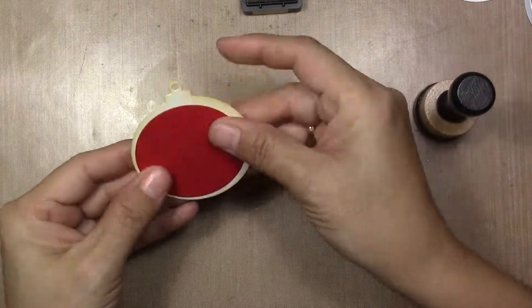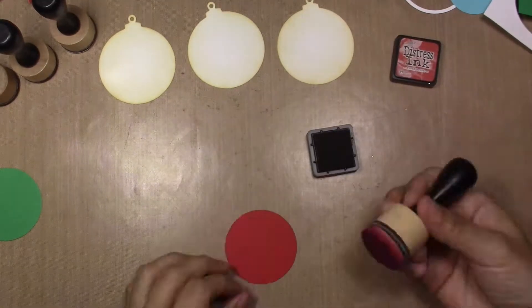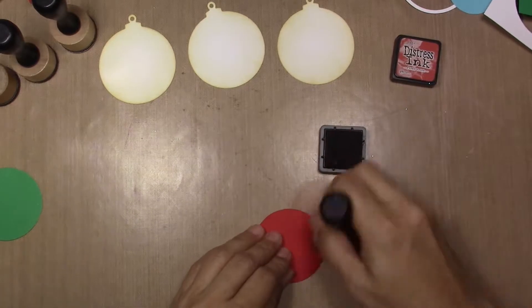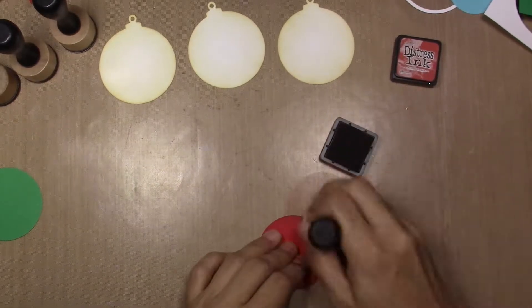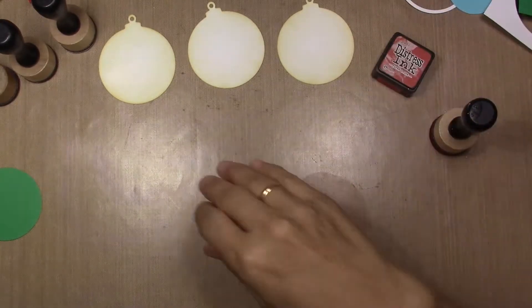Then I'm going to cut three circles, one in red, one in blue and one in green. I'm going to do the same thing, distress them with a little bit of the same color and a little bit of black. After that I'm going to glue them to the ornaments.